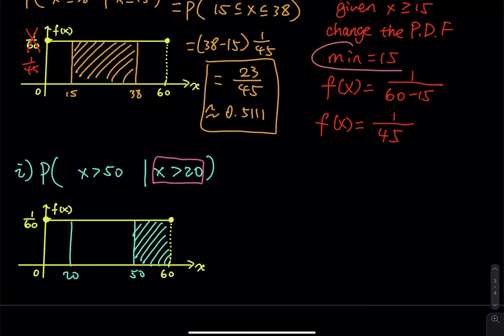Look at the previous problem. The given is 15. It's based on 15. So this one you do, so this time now, the minimum is 20. The maximum is now 60. So the PDF is 1 divided by 60 minus 20. So that is 1 divided by 40.